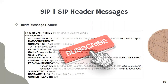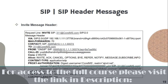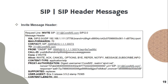This is how the invite message looks like from the Wireshark tracing. If you open the Wireshark application and try tracing a specific number and you find that this person is sending an invite message to call a specific person, this is how the trace looks like.